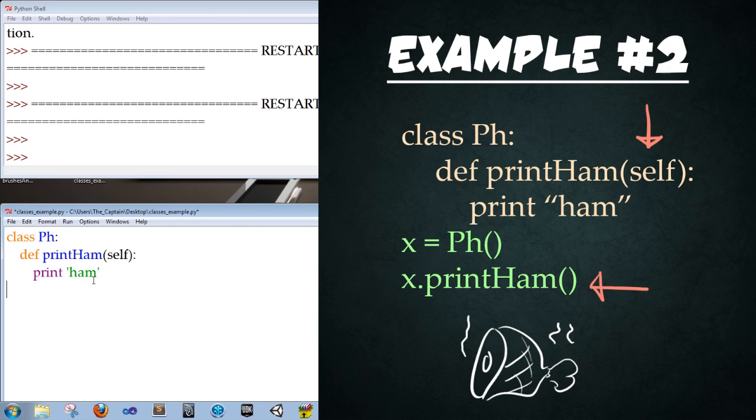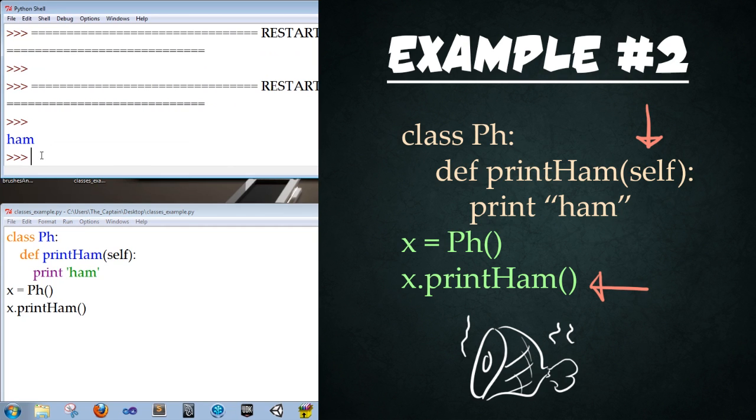So now we're going to go ahead and create an instance of the class, and we're going to do that with x equals uppercase P, lowercase H, open, close parentheses, enter, and then we're just going to call that function using the dot accessor. So x dot printHam, open, close parentheses, enter, save, and then we're going to run it pressing F5. Perfect. So we didn't have any errors returned and it actually printed out ham. Our function worked exactly as we had.